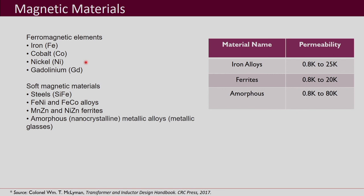Their combinations are many times used to make what are called soft magnetic materials. Soft magnetic materials are mainly of four types: steel-based, iron alloys, ferrites, and amorphous materials which can be of metallic glass type or nanocrystalline type. The permeability range is shown here — for iron alloys, and then for ferrites and amorphous materials. Amorphous materials have relatively much higher permeability range compared to iron alloys and ferrites.